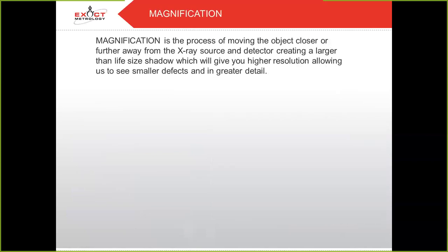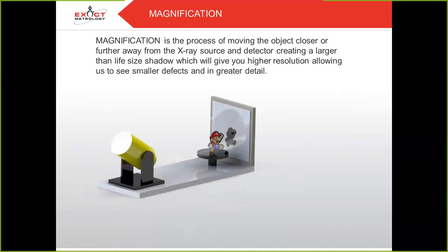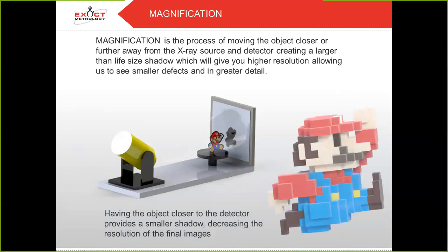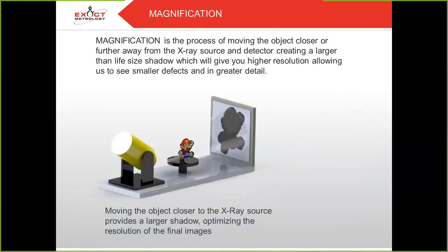And magnification. Magnification is the process of moving the object closer or further away from the x-ray source and detector, creating a larger-than-life shadow, which will give you a higher resolution, allowing us to see smaller defects in greater detail. Having the object closer to the detector provides a smaller shadow, decreasing the resolution of the final images. Moving the object closer to the x-ray source provides a larger shadow, optimizing resolution of the final images.